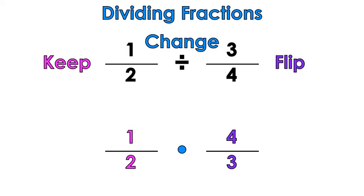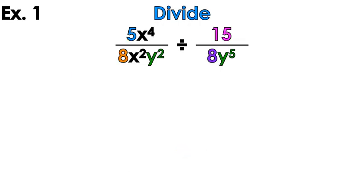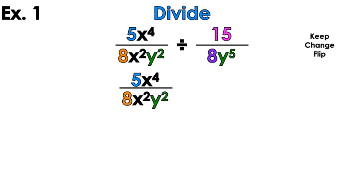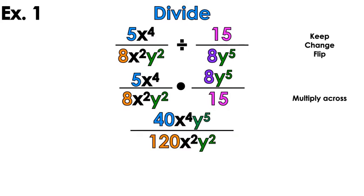So using that same energy — keep that same energy — we're going to do that with rational expressions. Let's say I have 5x to the fourth over 8x squared y squared, divided by 15 over 8y to the fifth. Well, I'm going to keep the first one, change the sign, and then flip, so this one's going to be upside down now. Once it's like this, it's the same exact way that we did multiplication, so the last lesson should come back to life. We're going to multiply across: 5 times 8 gives me 40, x to the fourth times y to the fifth gives me x⁴y⁵.